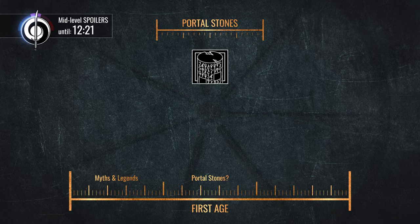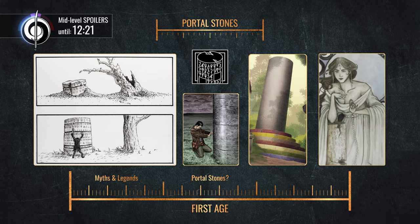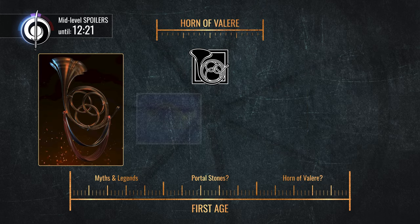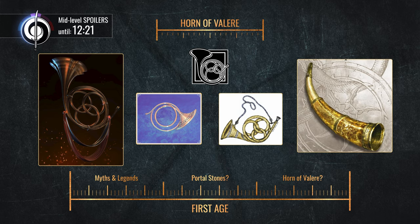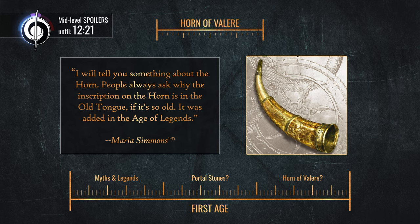Though it is not clear when portal stones were created, we do know that researching Aes Sedai in the Second Age believed that portal stones were created in a previous age to theirs, so I've included that here. The Horn of Valere was also said to be created in an age previous to the Second Age, so I will place it here as well, though the Horn and portal stones may have been created before the First Age. Maria Simmons, one of Robert Jordan's closest associates who had access to all of his notes, said that the Old Tongue inscription was added to the Horn during the Second Age, or Age of Legends, but the Horn itself comes from an earlier age.